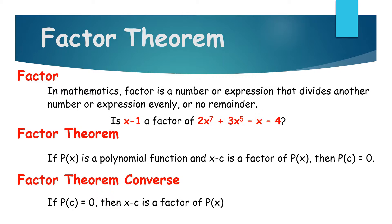So all we have to do is identify if p of c is equal to 0 or not. If p of c is 0, then it is a factor. If p of c is not 0, then it is not a factor. Remembering our previous lesson, p of c is the remainder when you divide the polynomial function p of x by x minus c. So if the remainder is 0, it is a factor; if the remainder is not 0, it is not a factor.